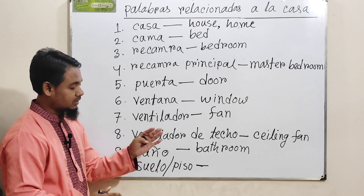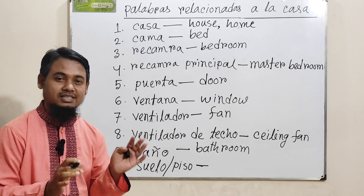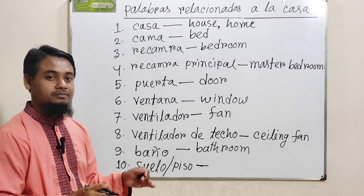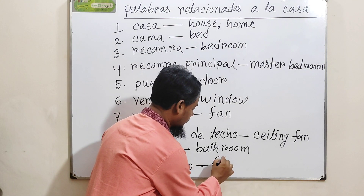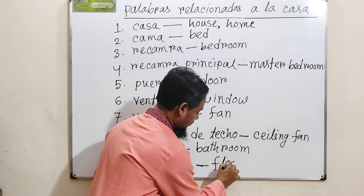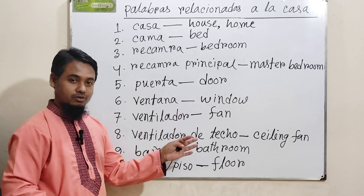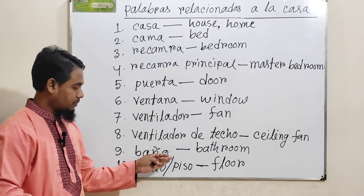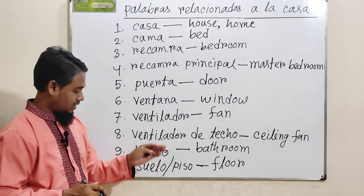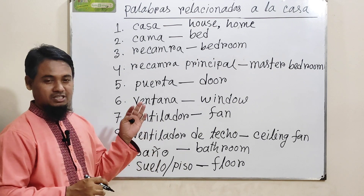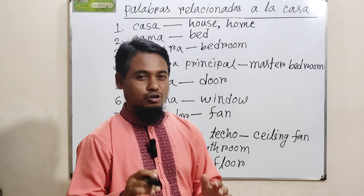Número diez: 'suelo' o 'piso'. There are two words here — suelo and piso — both express the same meaning: 'floor'. Suelo means floor, piso means floor. Sometimes piso also means flat, but here piso means floor.